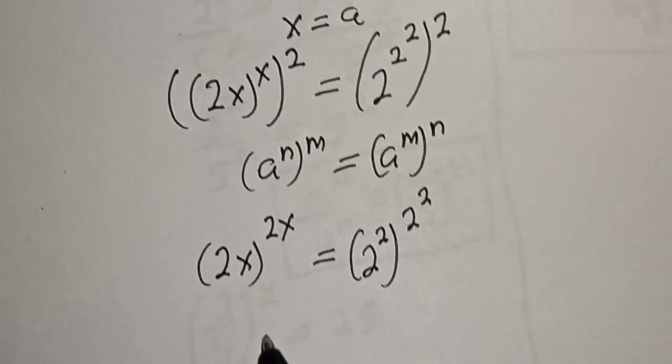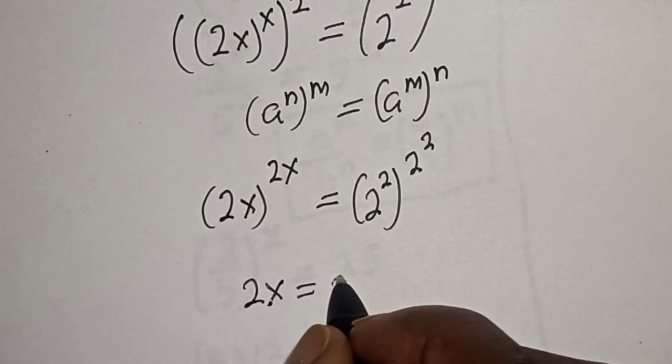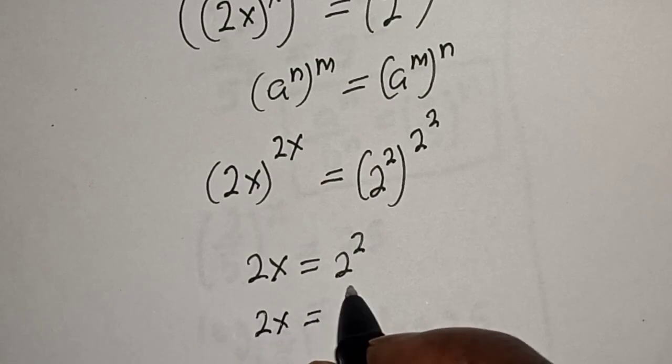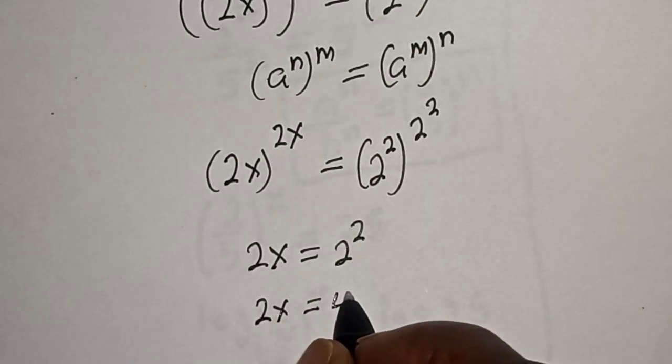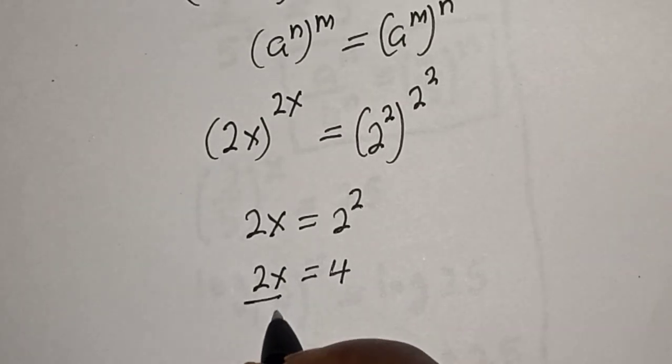Therefore, 2x is equal to 2 raised to power 2, and 2x equals 4. Let's divide both sides of the equation by 2.